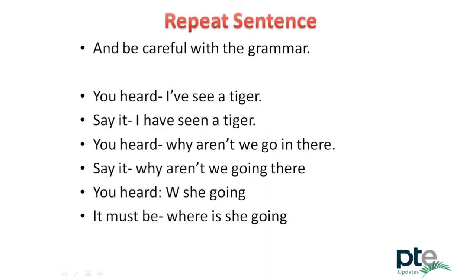Be careful with grammar — it is very important in repeat sentence. For example, if you heard 'I have seen a tiger,' knowing grammar tells you that with 'have' we use the third form of the verb. Similarly, if you heard something like 'why aren't we go in there,' grammar tells you it should be 'why aren't we going there?' — so you can correct it. Grammar knowledge allows you to reconstruct sentences you partially heard by applying rules to fill in gaps.